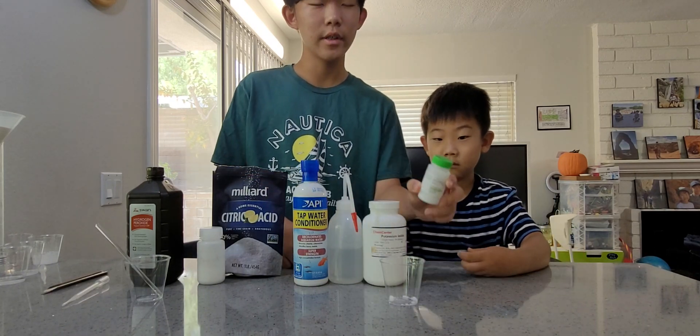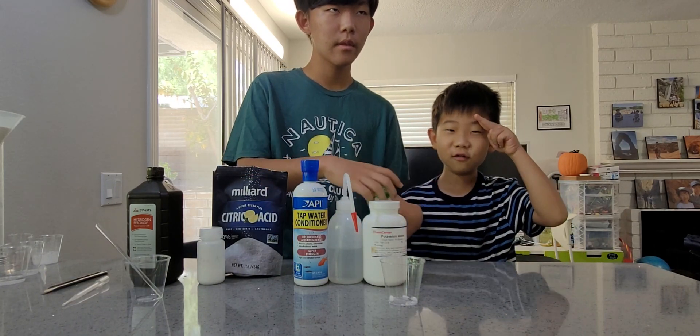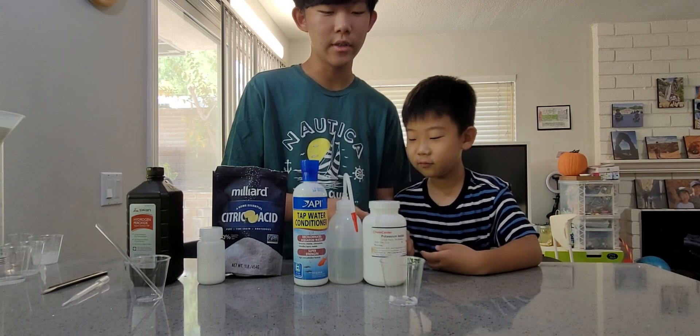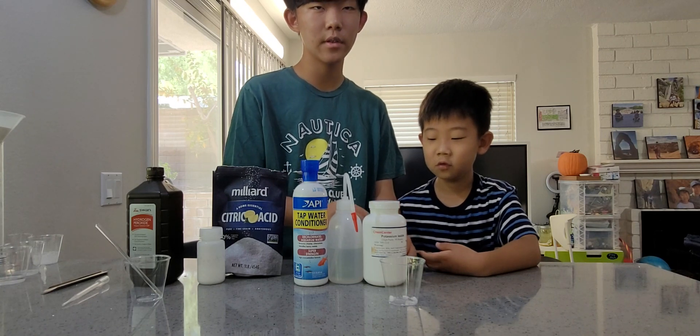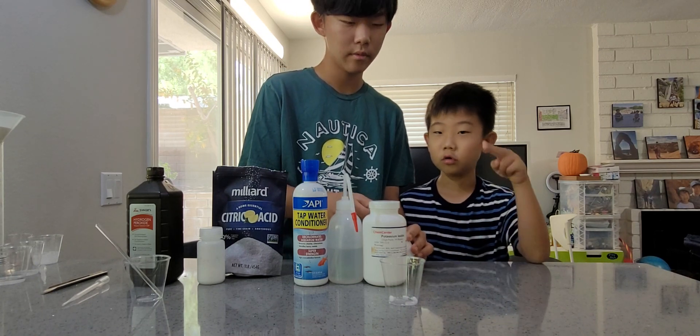The next ingredient we need to add is starch. We don't need that much starch either because there's so little iodine. So we need only a little bit of starch to complex with it to produce a blue color.